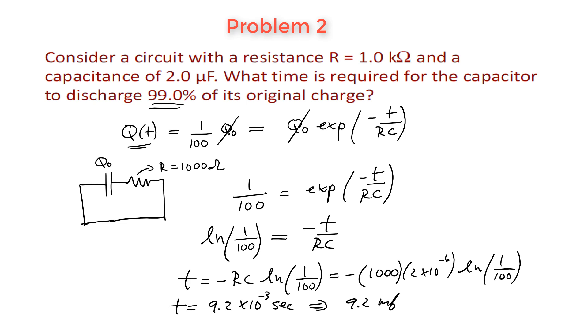Okay, pretty straightforward. I think the only kind of trickiness here was they used this language, 99% of the original charge. So you have to keep in mind that if you lose 99% of the charge, you're going to be left with 1%. And that's what our equation for the discharging tells us. It tells us how much charge we have.